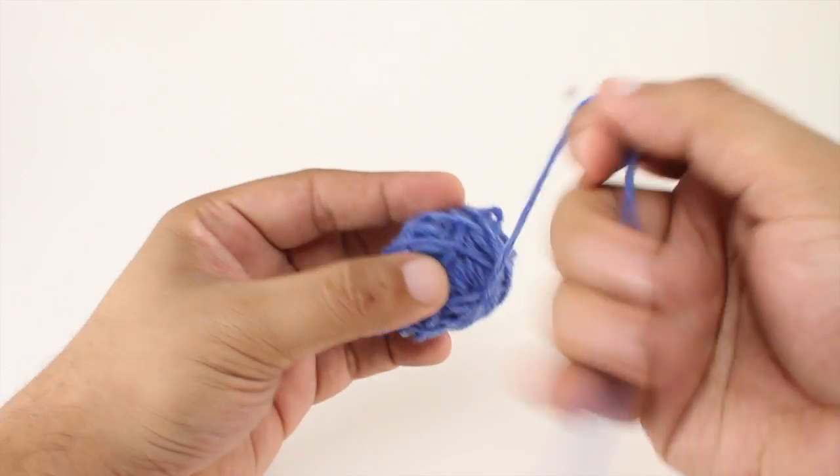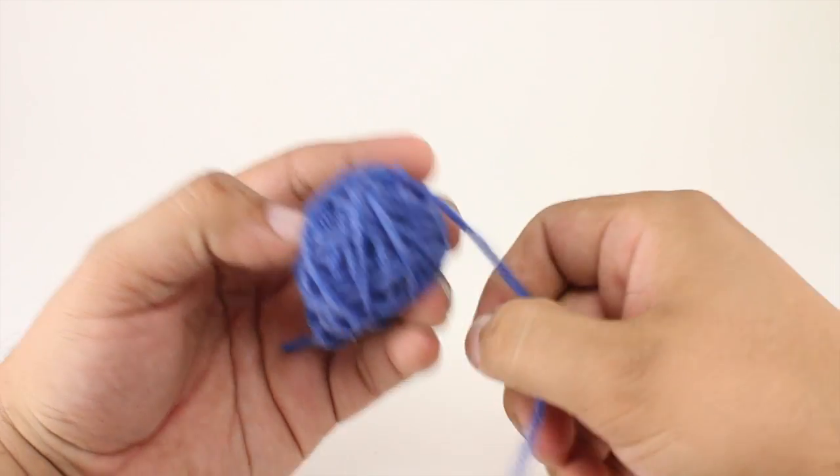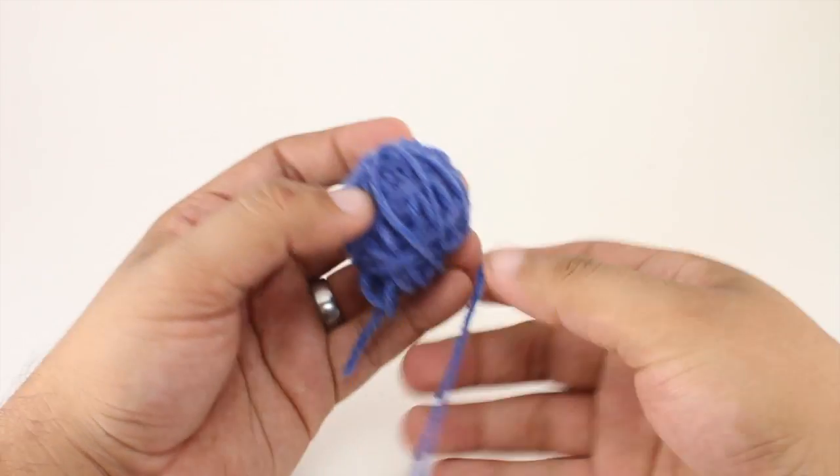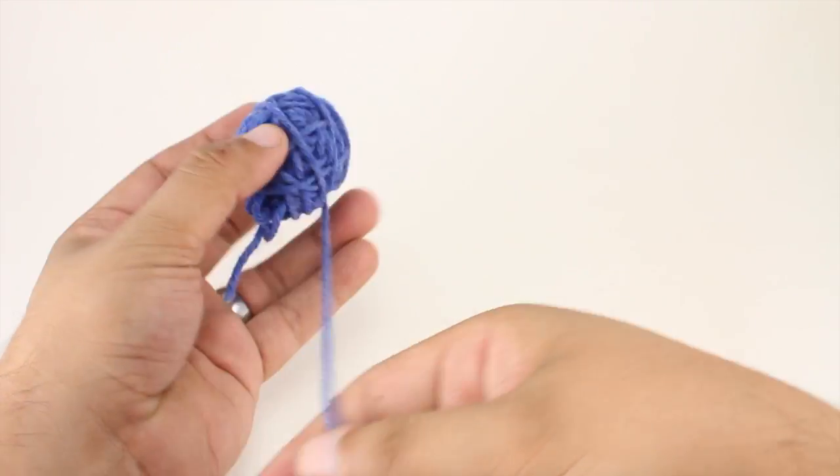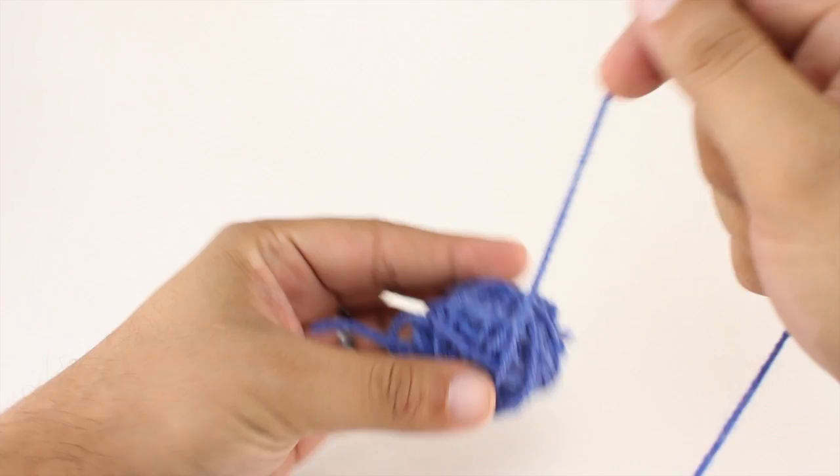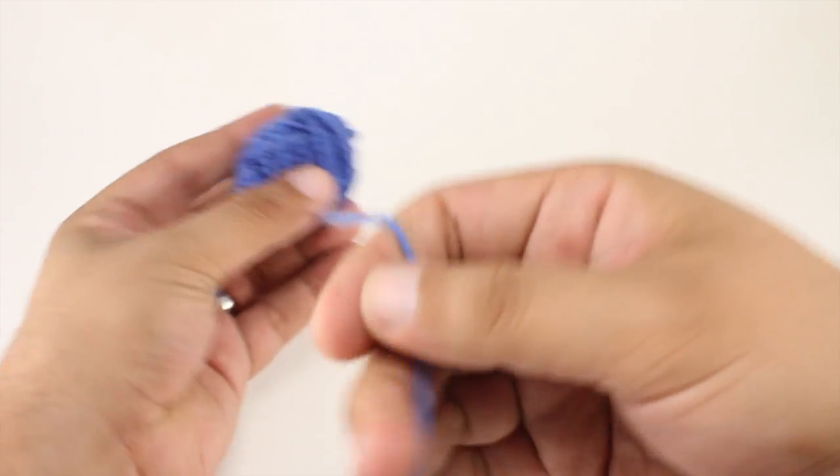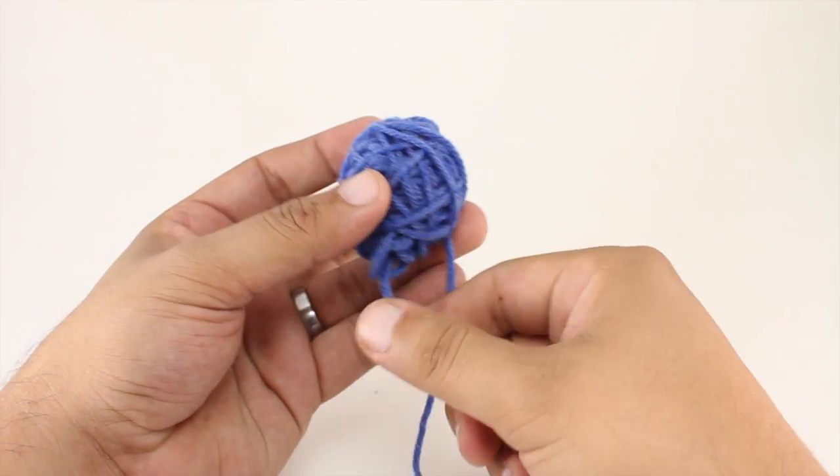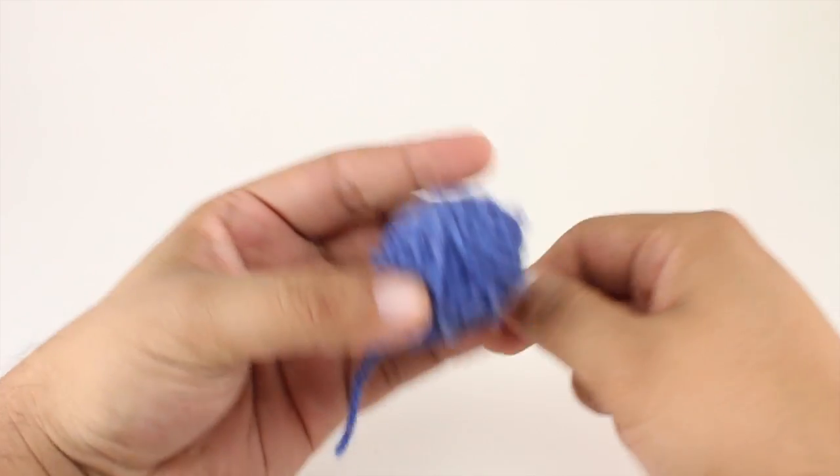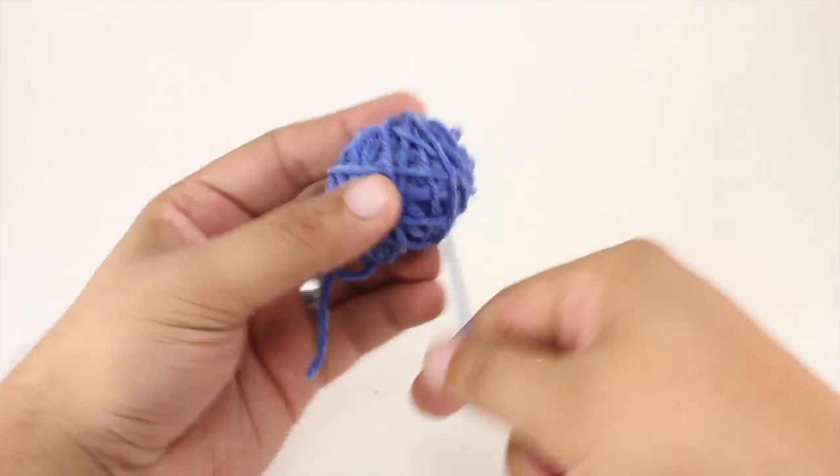Now again, this isn't going to be quite as clean looking as if you were using another tool to wrap it around. There's actually a device made specifically for winding balls by hand for a center pull that's called a nostepinne, but I don't own one right now because I've never needed to use it.